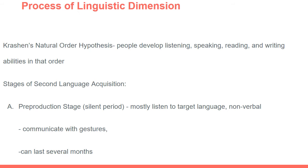Now let's talk about the process of linguistic development. In Krashen's natural order hypothesis, people first develop language through listening, then speaking, then reading and writing — much like how a baby learns language. A baby first learns through listening to others speak, then starts practicing speaking and making their first words, then later in the school setting learns how to read, and from reading knowledge begins to write.